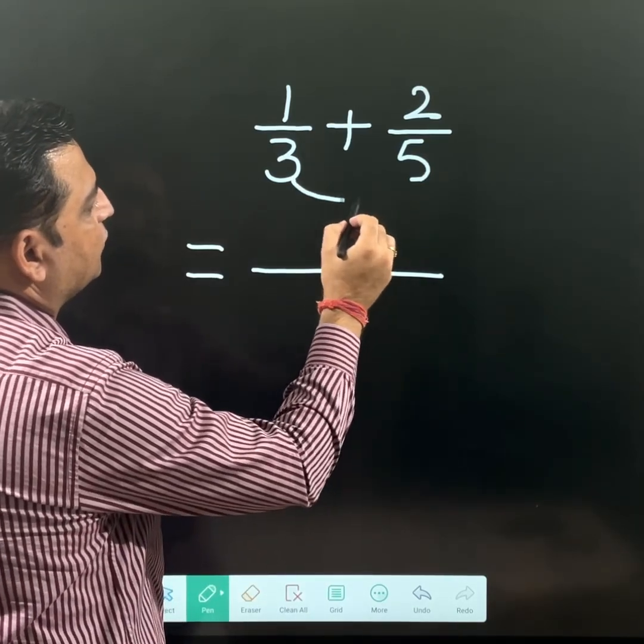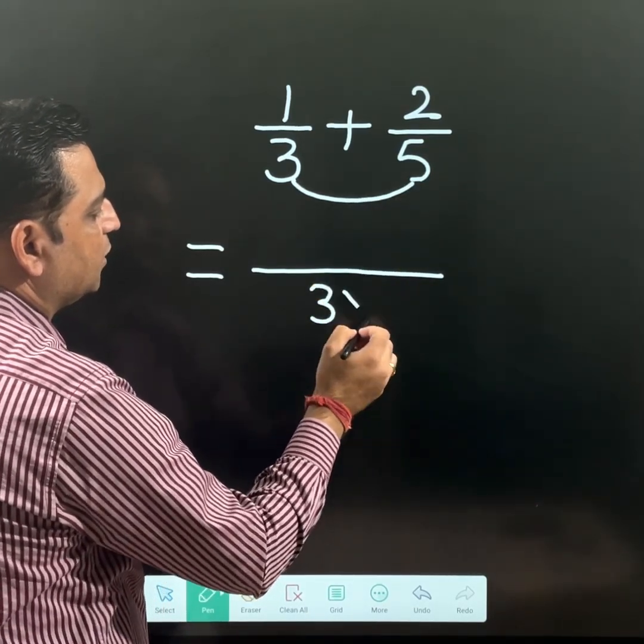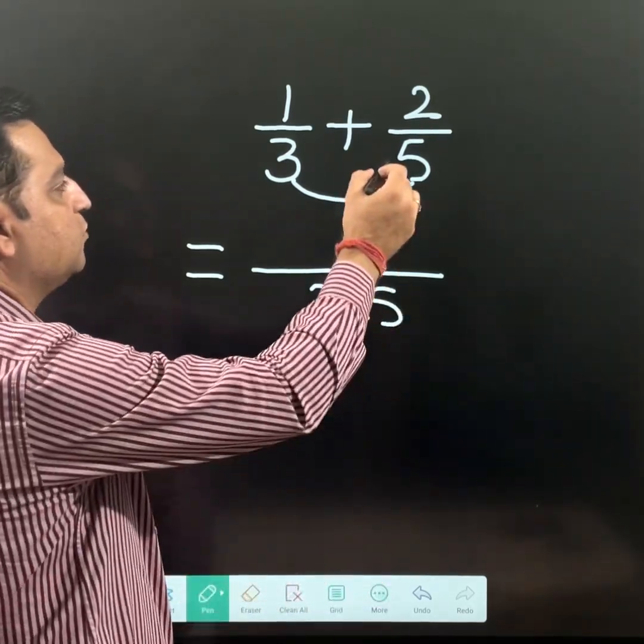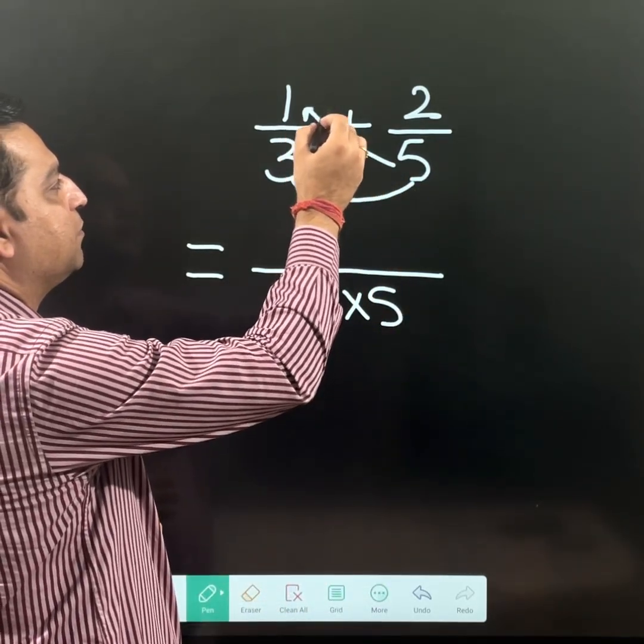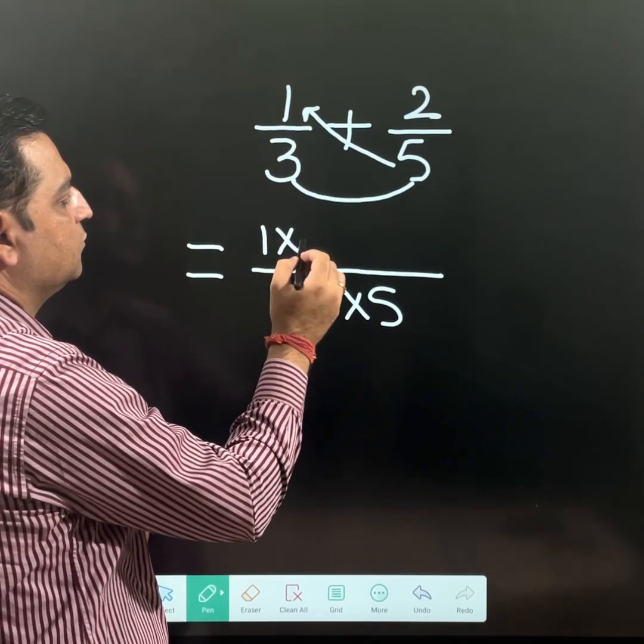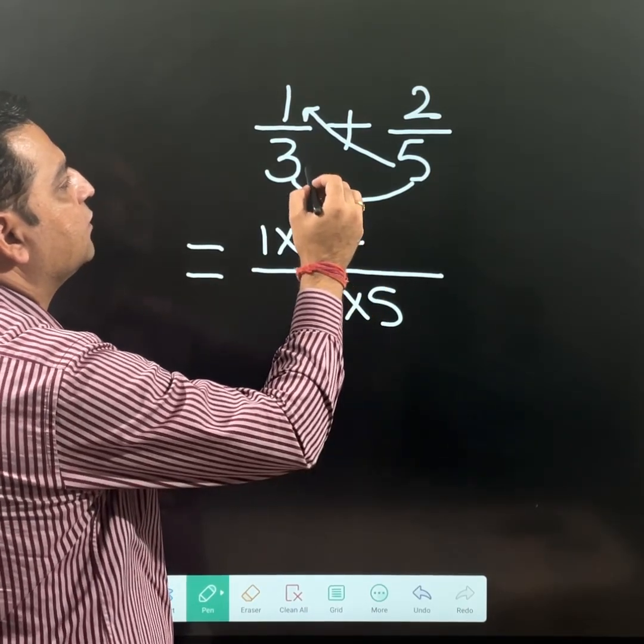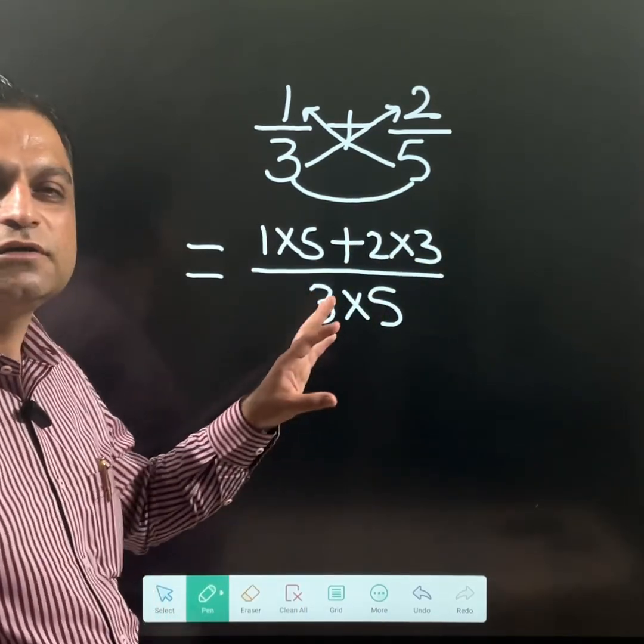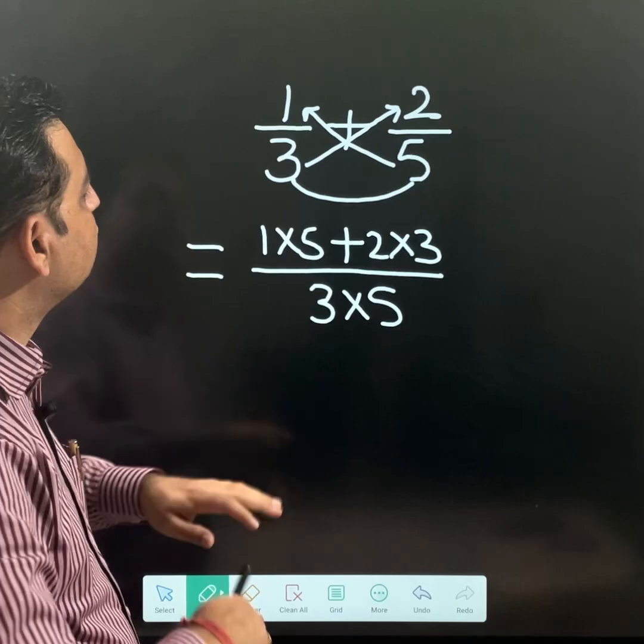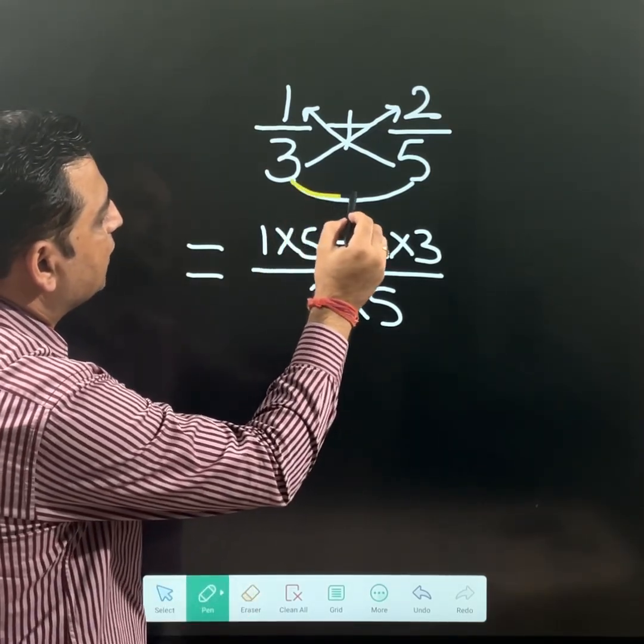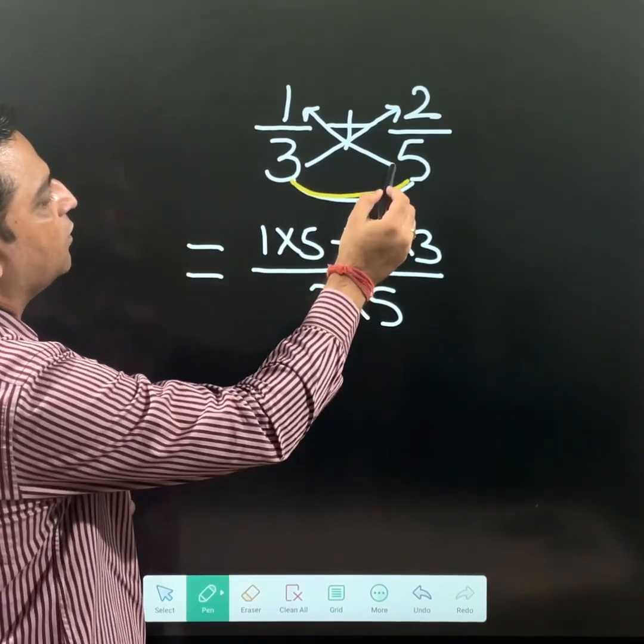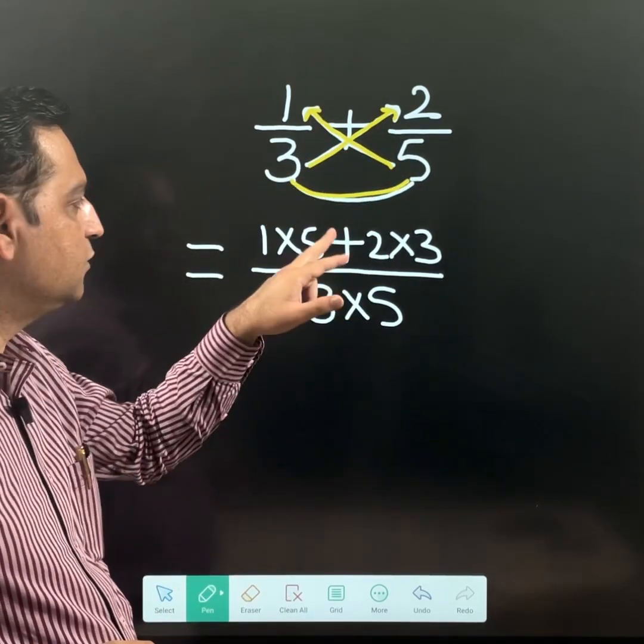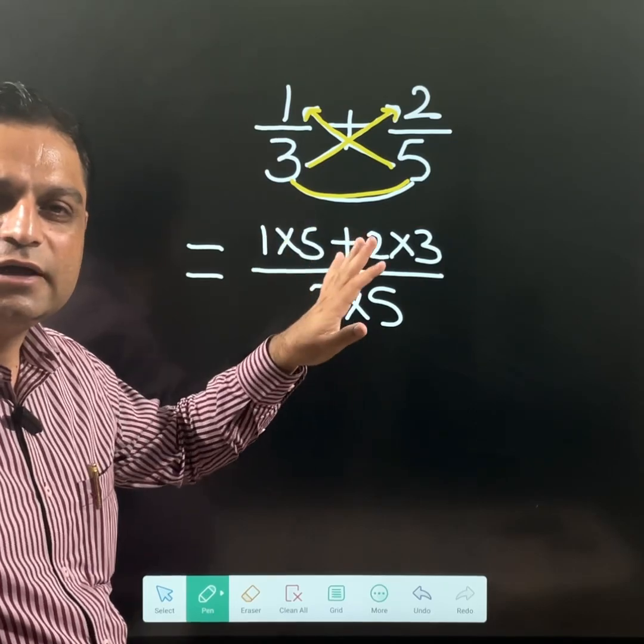Just multiply these both: 3 multiply by 5 and write them in the denominator. And cross multiply: this 5 multiply with 1 plus this 3 multiply with 2. This is known as the butterfly method. Multiply both the denominators and cross multiply the values. If I am having a positive sign in between, same positive sign I will have to write.